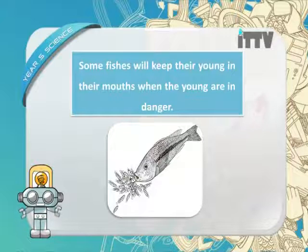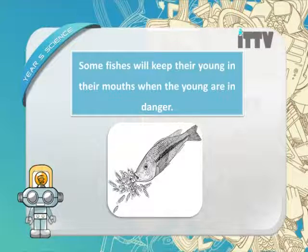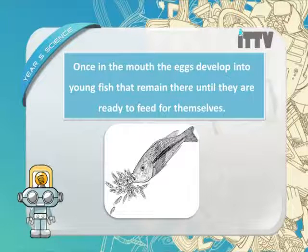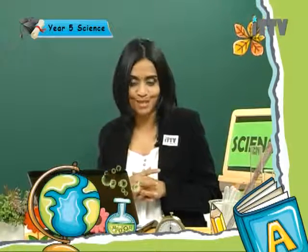Some fishes keep their young in their mouths when the young are in danger. Once in the mouth, the eggs develop into young fish that remain there until they are ready to feed for themselves. Like crocodiles, fishes also keep their eggs and allow them to hatch inside the mouth whenever they sense danger from an enemy that might attack their young.